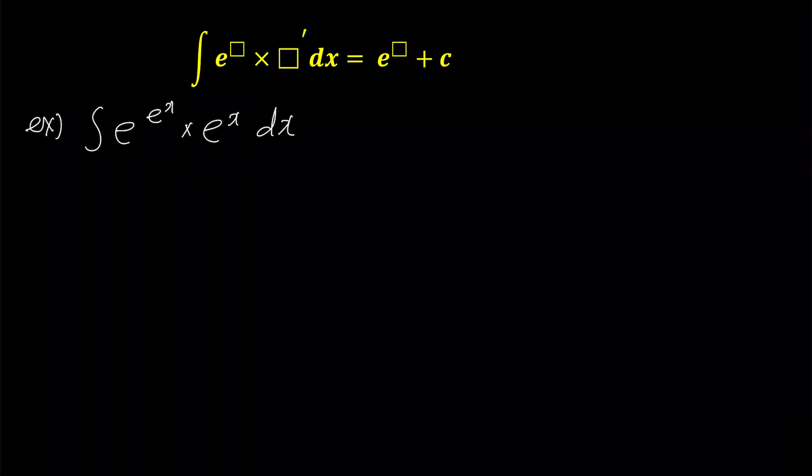How about another example that looks really difficult, but it's actually very easy. There seems to be a ton of exponential functions, but don't be intimidated. All we need to do is figure out who goes in the box and who goes in the box prime. Hey, look closely. Can you see it?